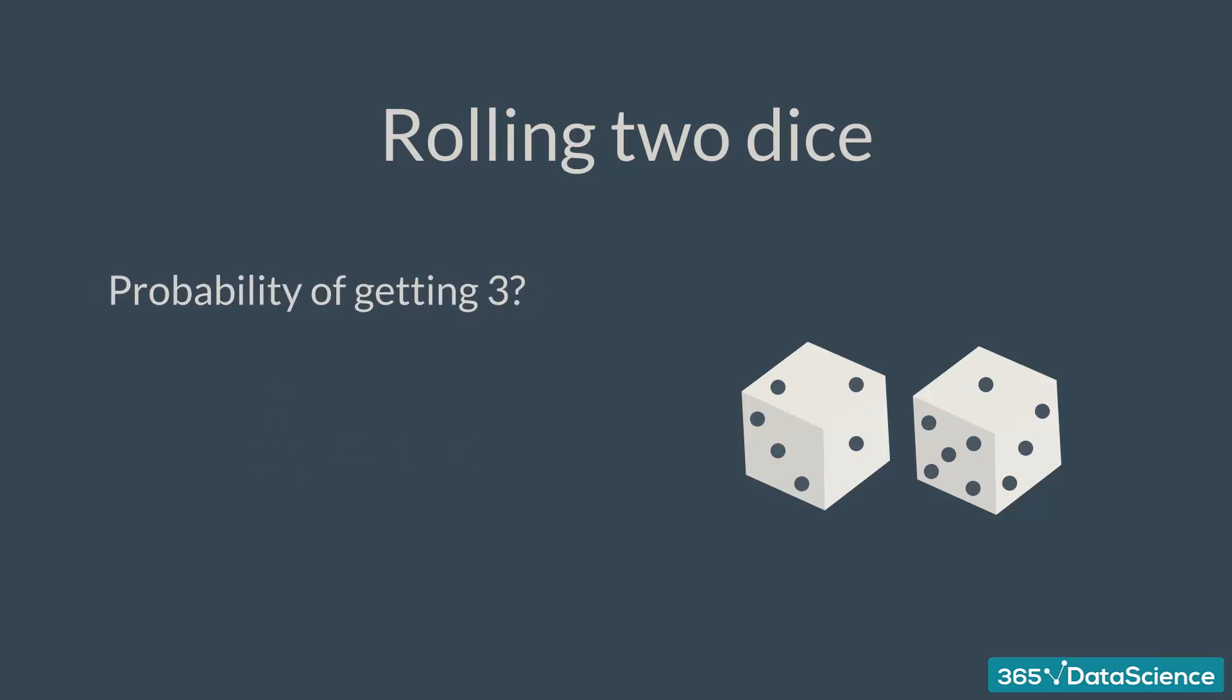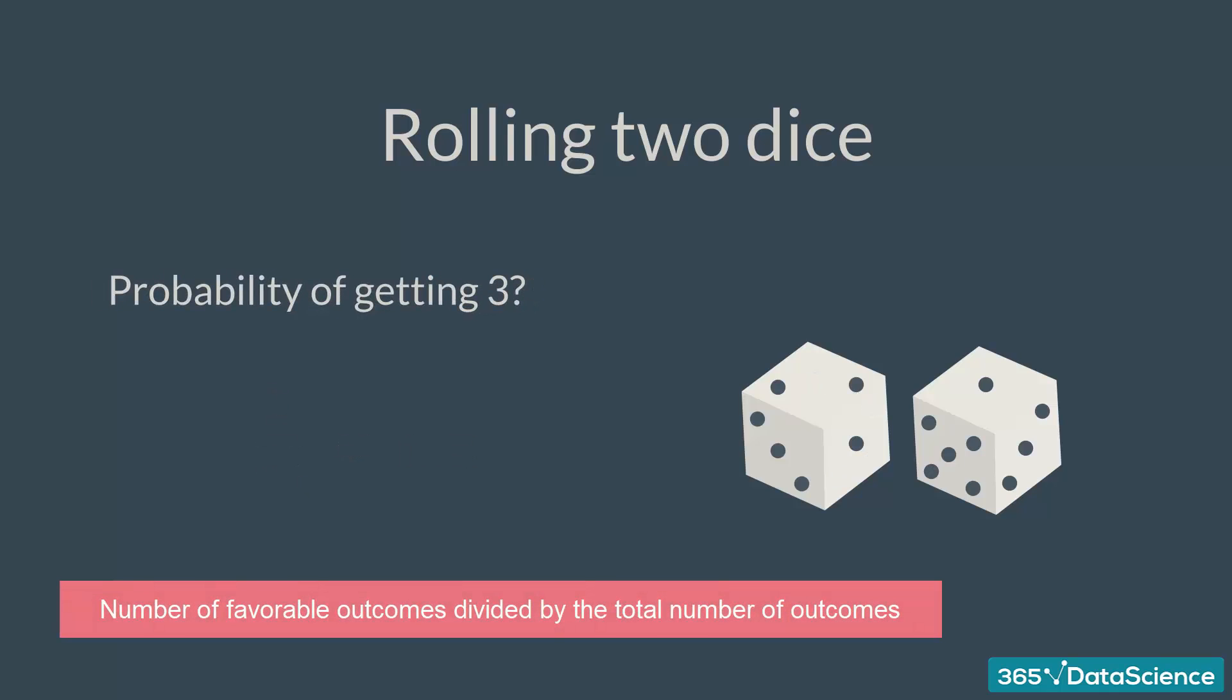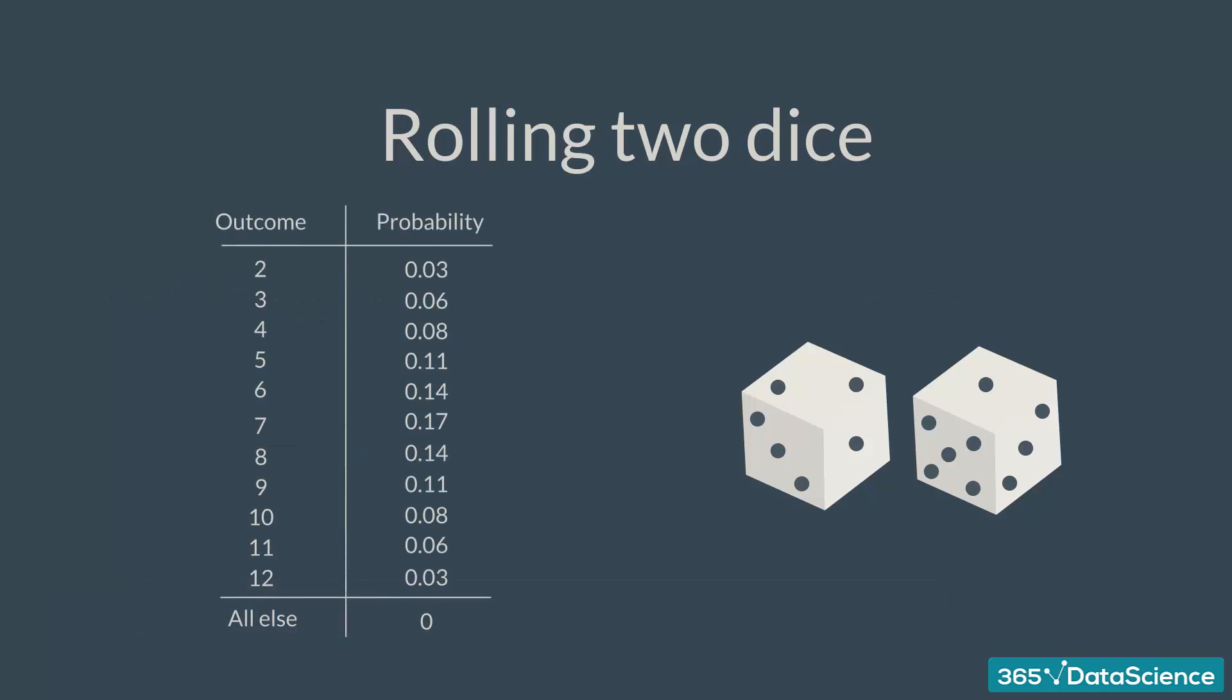Similarly, the probability of getting a sum of three is given by the number of combinations that give a sum of three divided by 36. Therefore, two divided by 36, or 0.06. We continue this way until we have the full probability distribution.